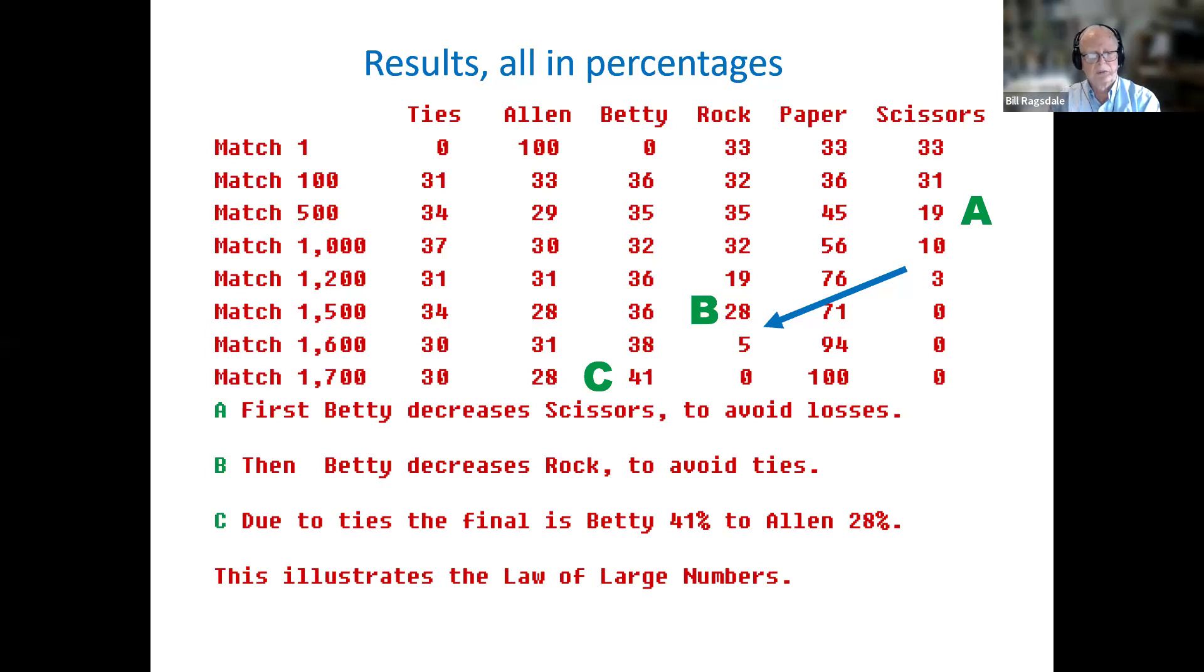Running this out to 1,700 games, we see that 30% of the time there are ties. 28% of the time, Alan wins, and 41% of the time, Betty wins. So she's increased her win from 33% of the time to 41% of the time. And during this development now, on the last column at the bottom right, she no longer plays rock at all. She plays paper 100% of the time, and scissors never. And this is taking, of course, of Alan's bias toward always playing rock.